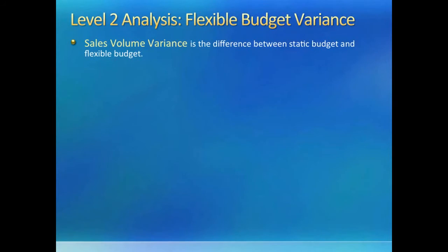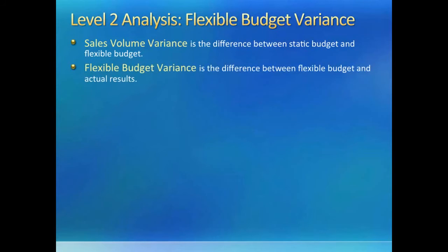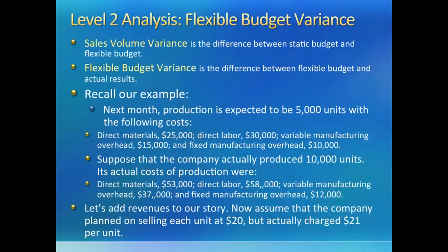Flexible budgets break up the difference between static numbers and actual numbers into two portions. The portion that arises due to differences in level of production or sales is called sales volume variance. The portion that arises due to the difference between actual spending and budgeted spending given the actual output is called flexible budget variance. Let us continue with our previous example — I have copied the static budget and actual results from the previous slide and added information about budgeted and actual revenues so that we can make an income statement.